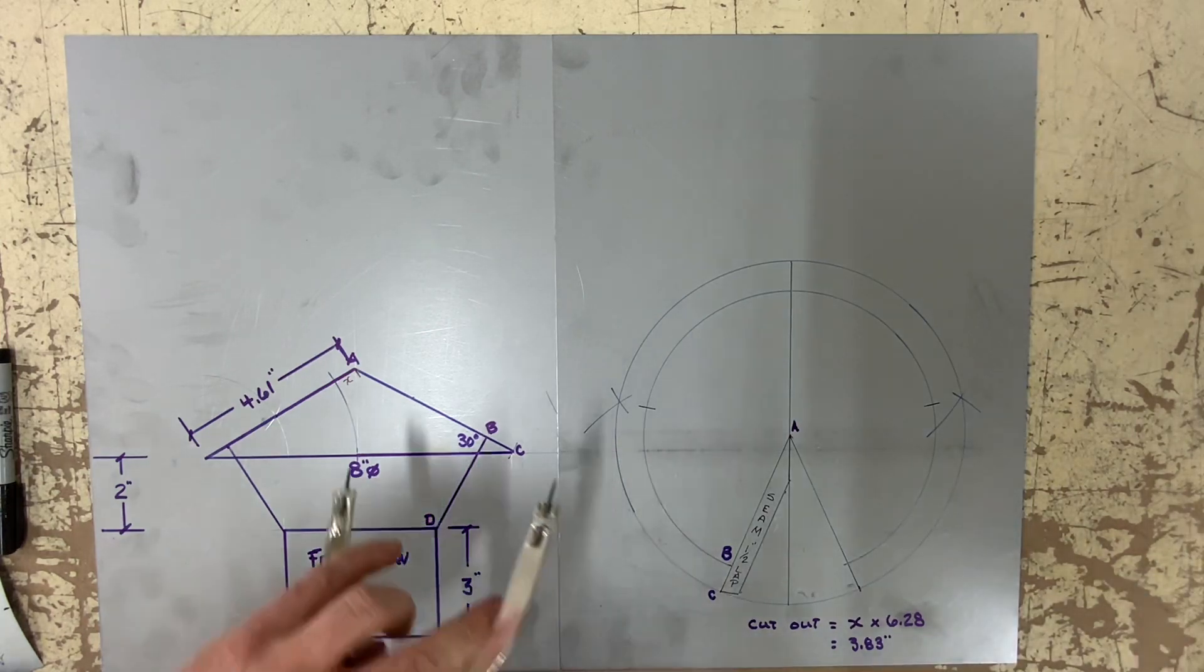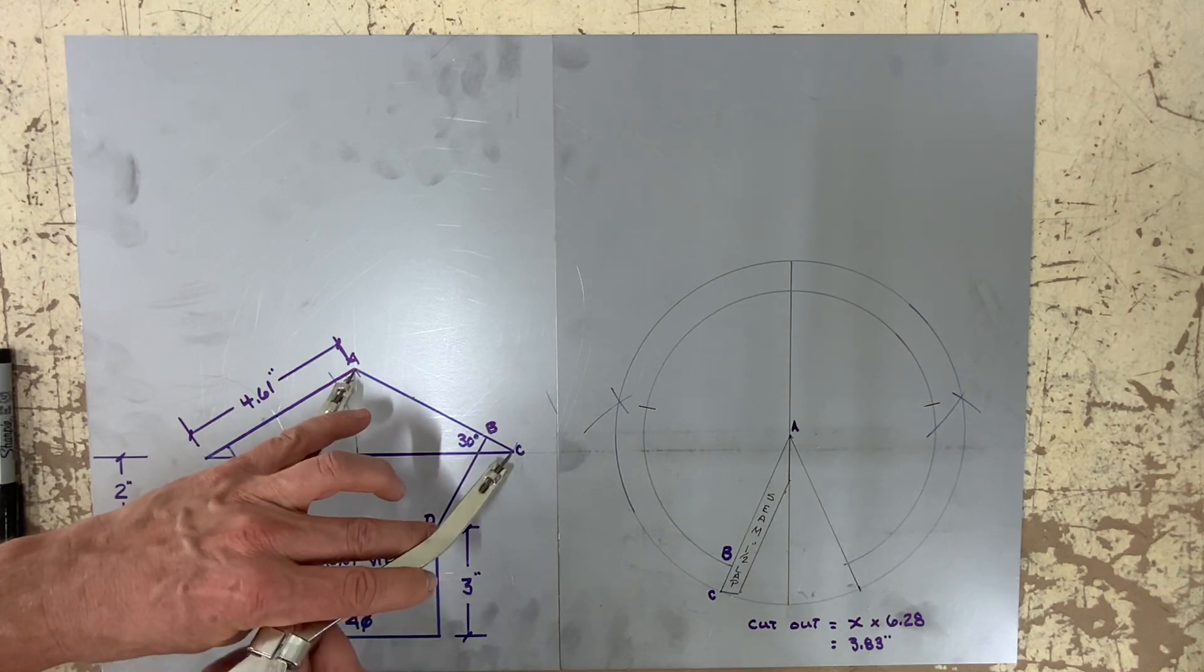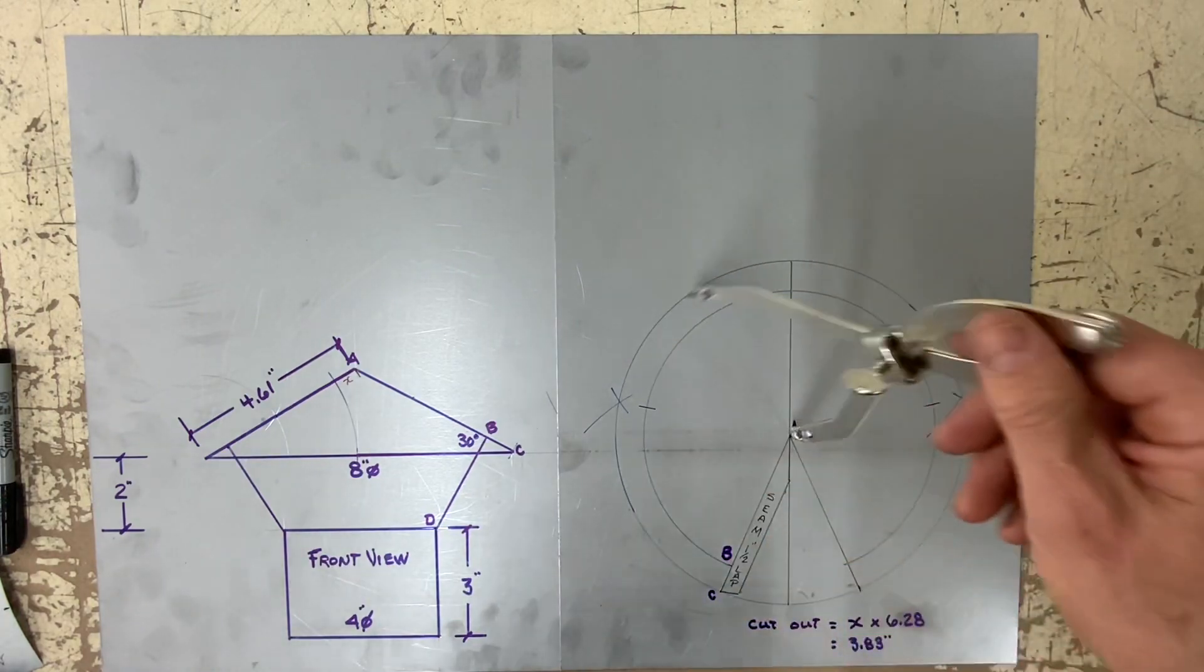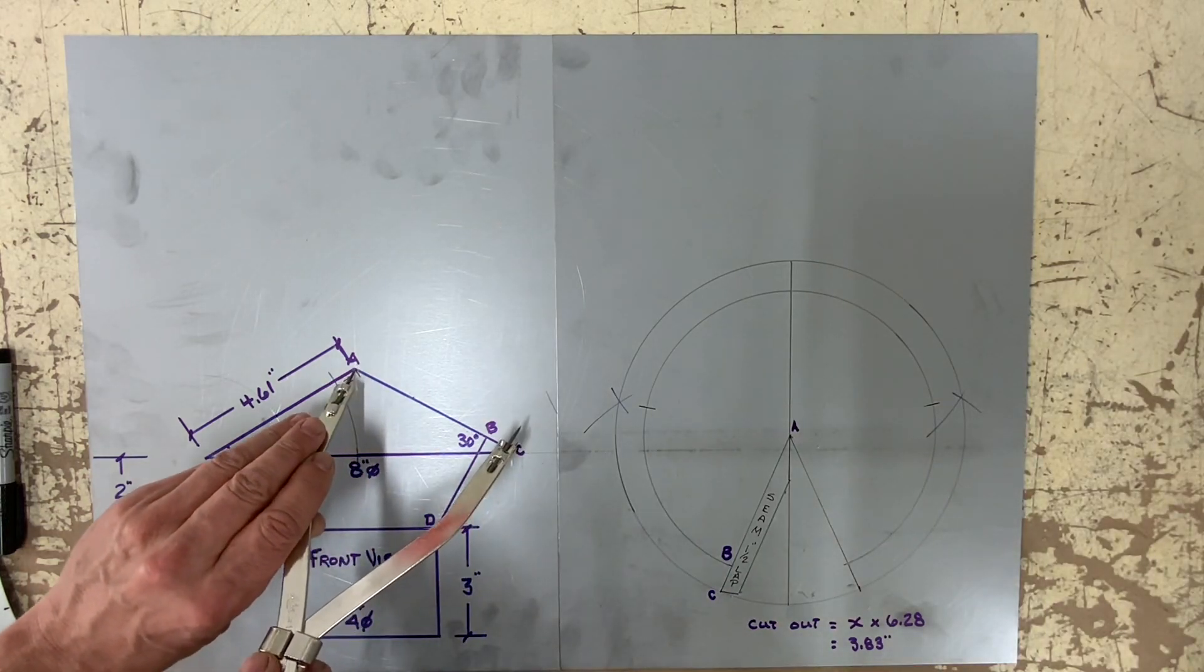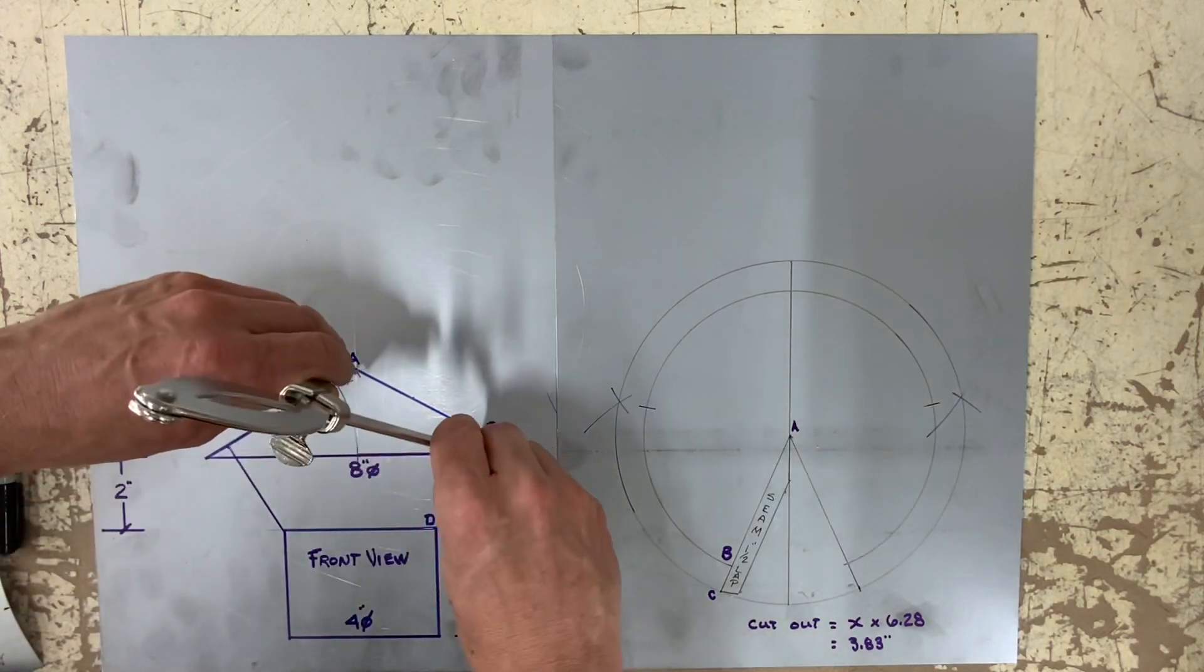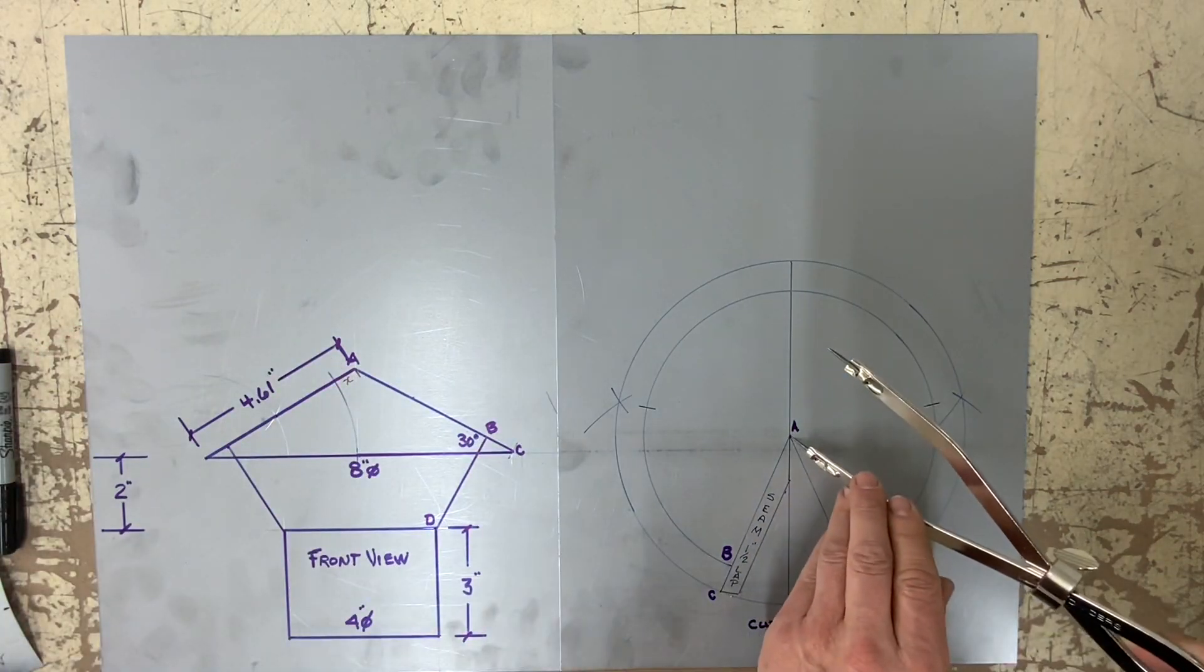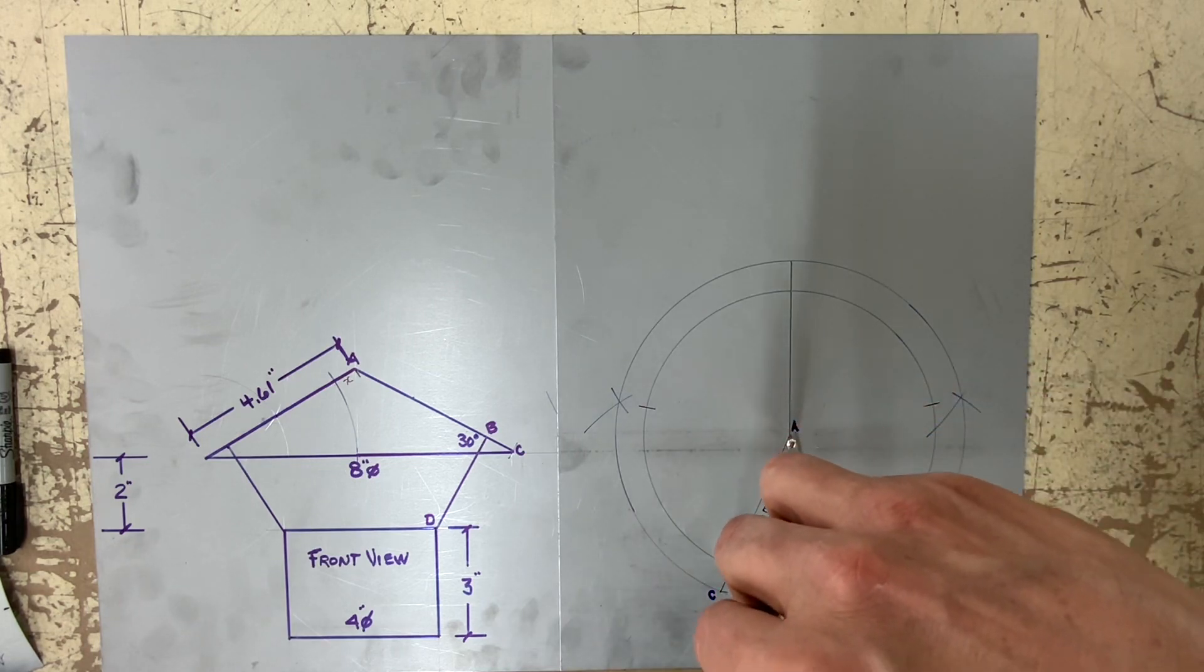So here you've seen I have the pattern of what it's going to look like. So let me demonstrate what I did to generate this pattern. Again, I took line AC and we drew the outside circle.